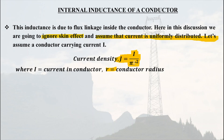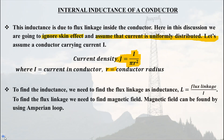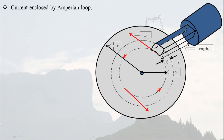To find the inductance we need to find the flux linkage, because inductance equals flux linkage divided by current. The current is already known as I. To find the flux linkage we need to find the magnetic field, and the magnetic field can be found by using Ampere's law — that is, the Amperian loop. To apply Ampere's law we assume an Amperian loop of radius y, where y is less than the radius of the conductor r. We are assuming this Amperian loop inside the conductor because we have to find the internal flux.